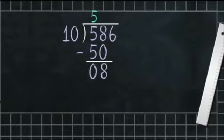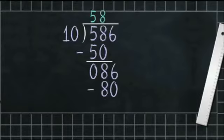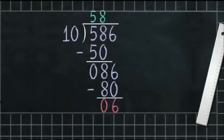Now we bring down 6 beside 8, giving us 86. We divide 86 by 10 — 86 will be divided 8 times, that is 10 × 8 = 80. We subtract 80 from 86: 6 minus 0 is 6, and 8 minus 8 is 0. So the quotient is 58 and the remainder is 6, which is the ones digit of the given number.